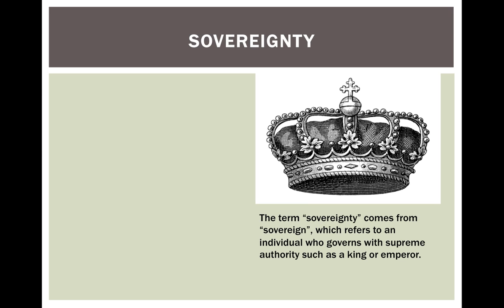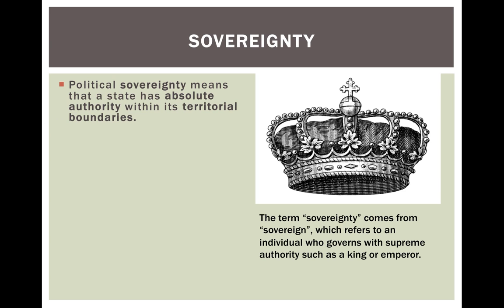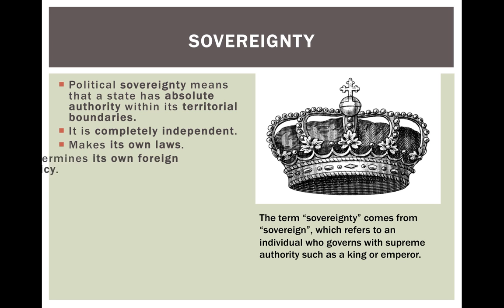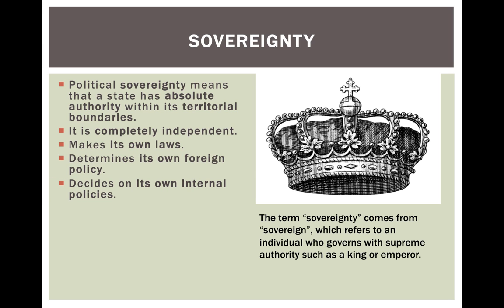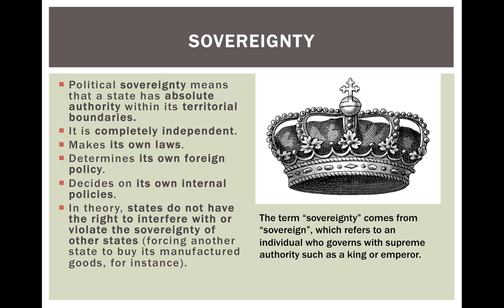Sovereignty: the term sovereignty comes from sovereign, which refers to an individual who governs with supreme authority, such as a king or an emperor. Political sovereignty means that a state has absolute authority within its territorial boundaries. It is completely independent, makes its own laws, determines its own foreign policy, and decides on its own internal policies. In theory, states do not have the right to interfere with or violate the sovereignty of other states — that is, forcing another state to buy its manufactured goods, for instance.